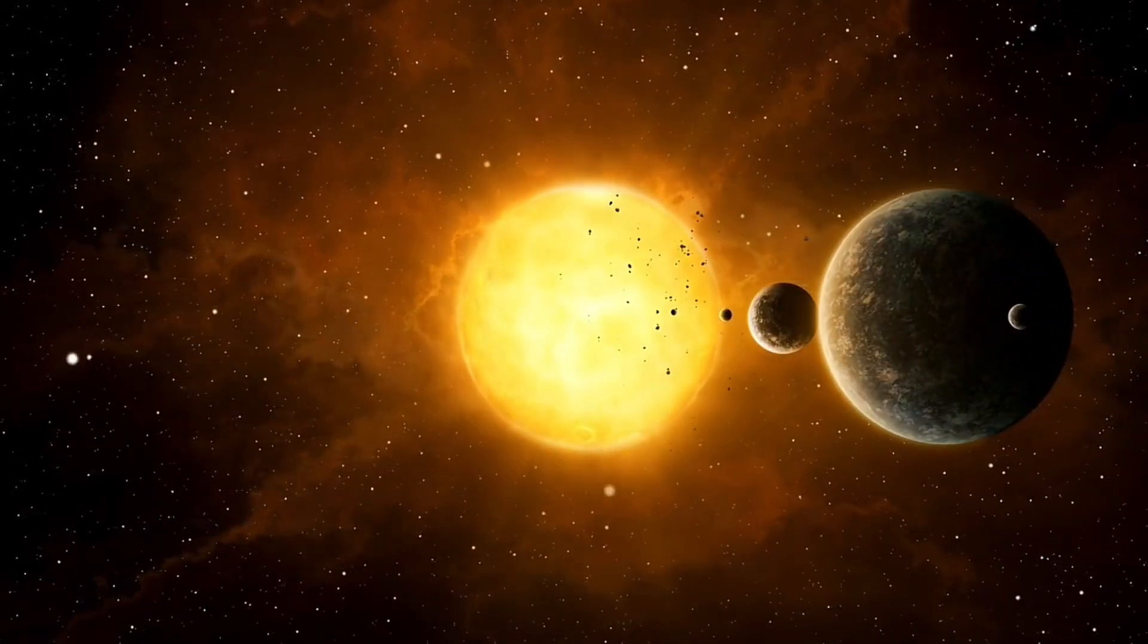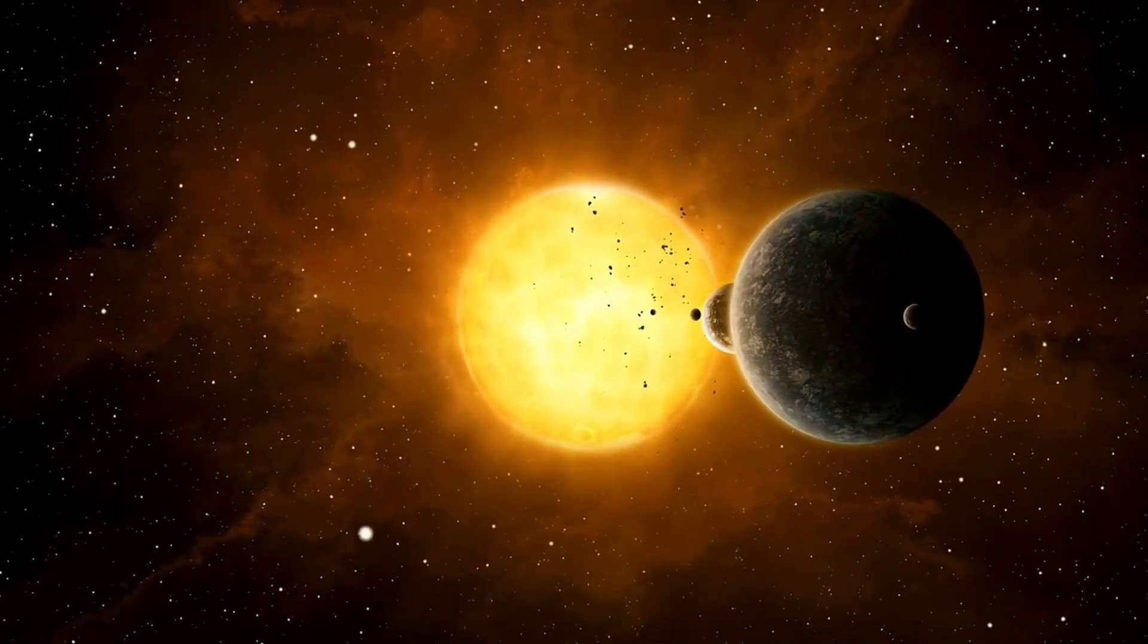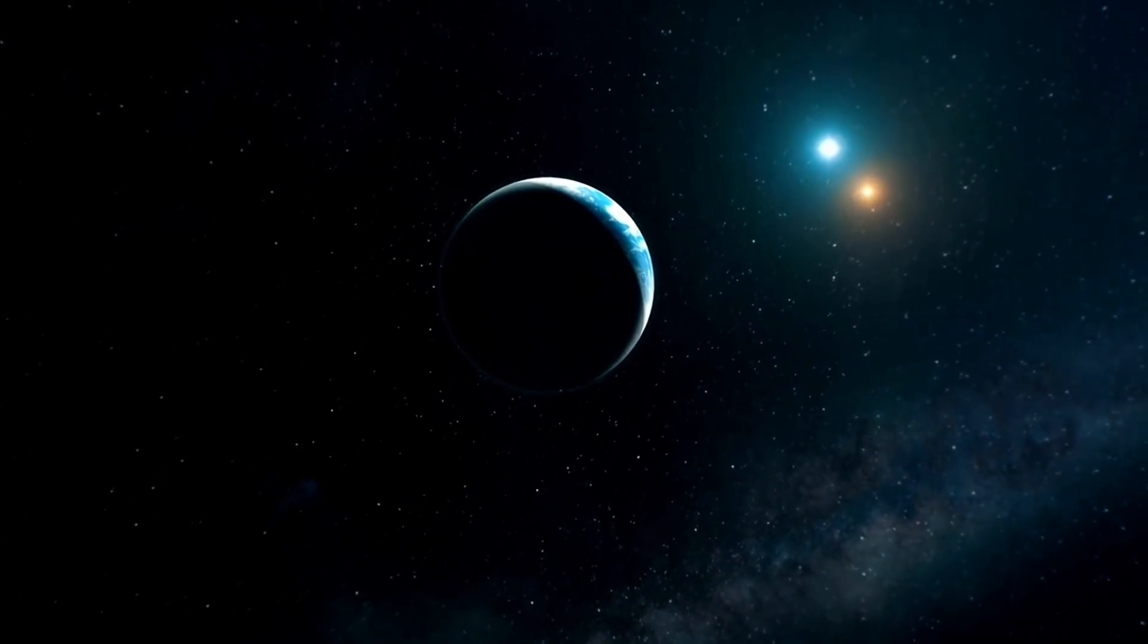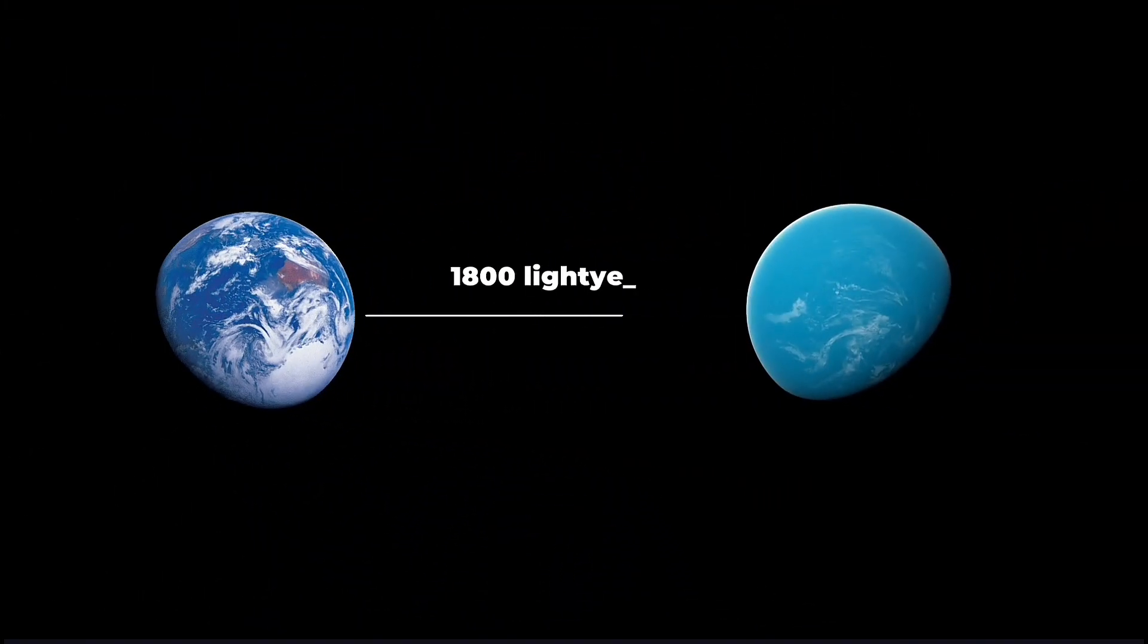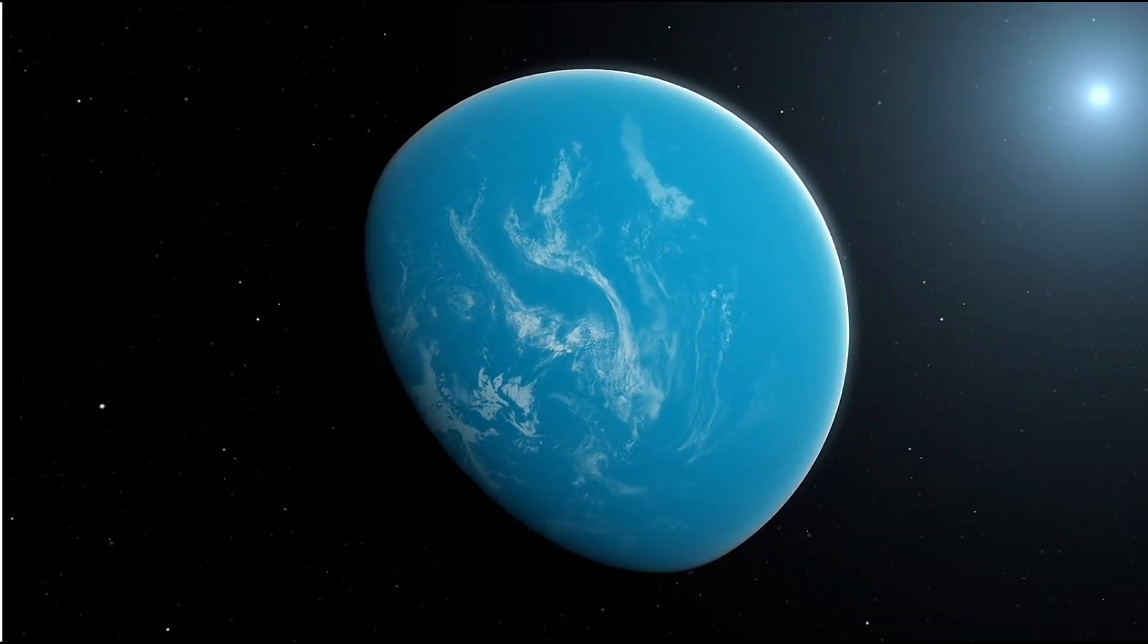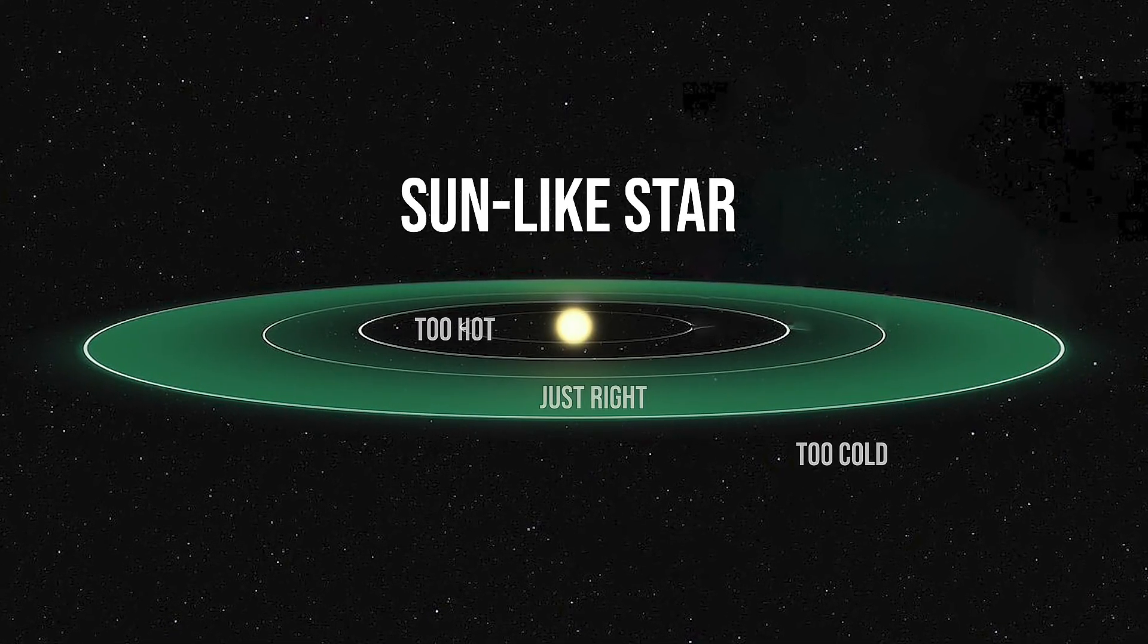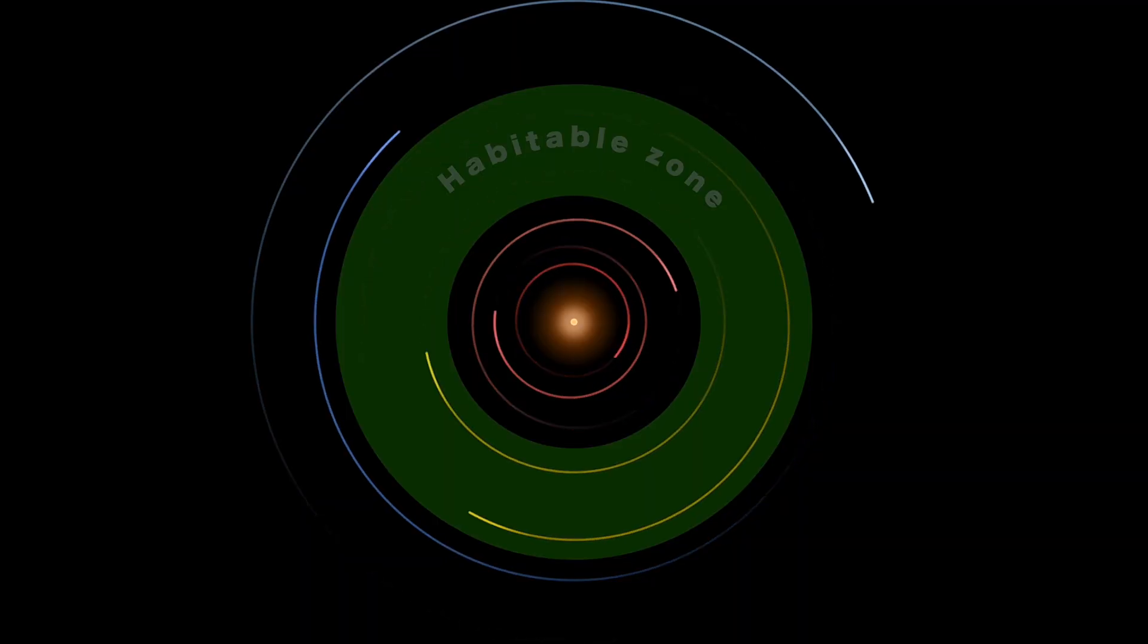Orbiting a star in a region where conditions may allow life to thrive, this distant world sparks both curiosity and imagination. Located nearly 1,800 light-years away, Kepler-452b orbits a star that's very similar to our Sun, and it does so in what scientists call the habitable zone.